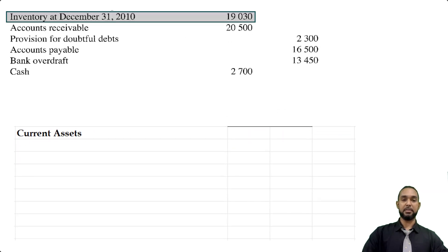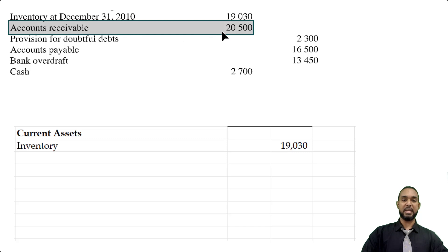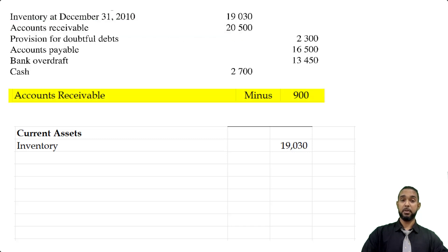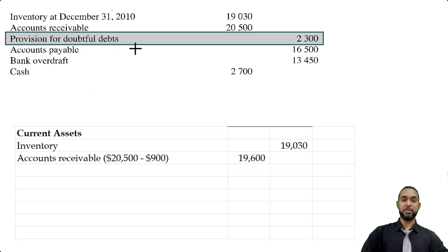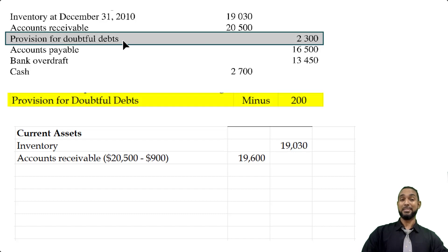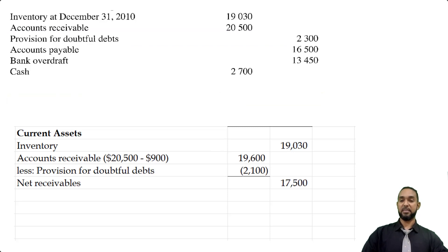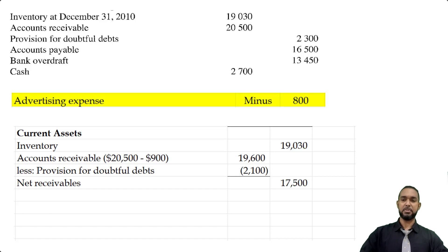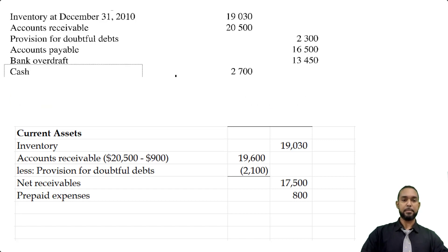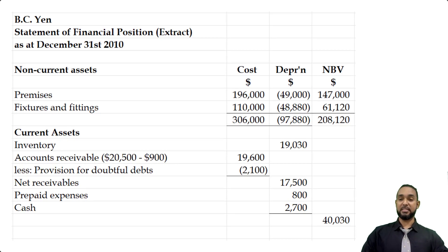Current assets will include inventory of $19,030. The next item is accounts receivable — we also had to write off $900 worth of bad debts, so the figure is $20,500 minus $900, giving us $19,600. From that we subtract the provision for doubtful debts, which we decreased to $2,100, leaving net receivables of $17,500. The first adjustment — the prepaid advertising expense — also goes here as a current asset. In the trial balance I'm only seeing cash of $2,700. Adding up all current assets gives a subtotal of $40,030. Adding that to the non-current asset subtotal of $208,120 gives total assets of $248,150.